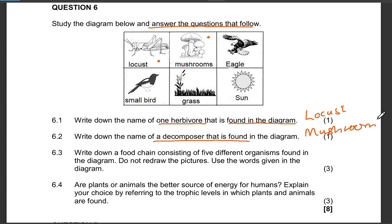Then write down a food chain consisting of five different organisms. That's very important. Consisting of five different organisms that are found in the diagram. Do not redraw the pictures. So whenever they ask you to write down or draw a food chain, you mustn't draw the pictures of that particular plant or an animal or decomposer. You just write down the words. Five different organisms. So let's look.